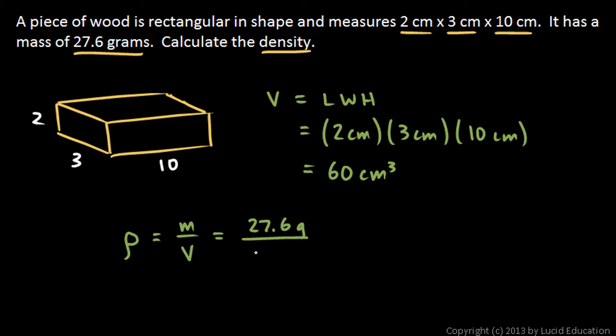So we divide this: 27.6 divided by 60, and we get 0.46, and then we have grams per cubic centimeter. So that's the density of this piece of wood.